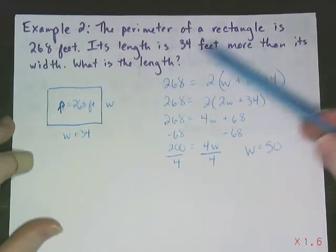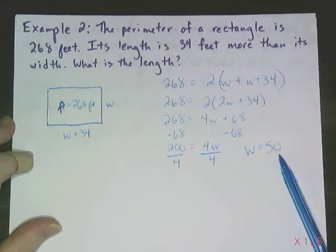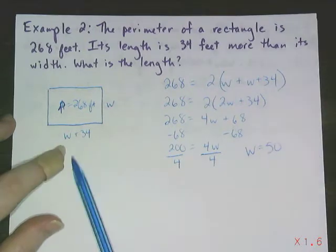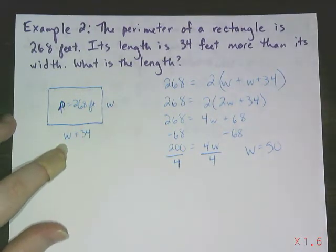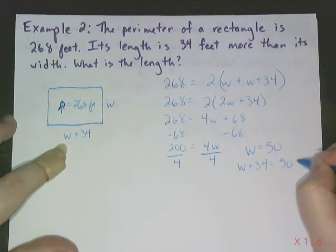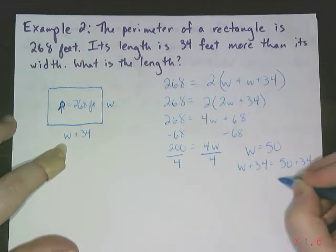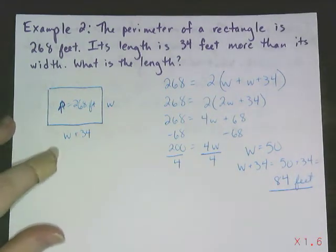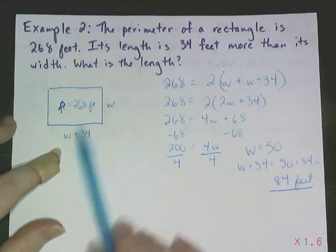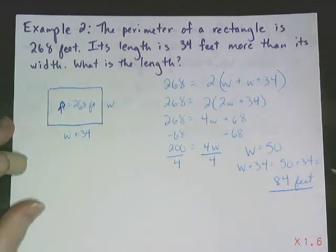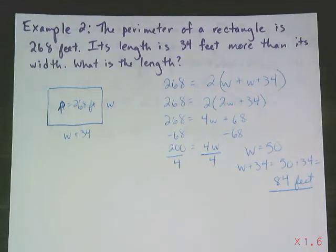I check my answer. Wait a minute. W is equal to 50. That's the width. I want to know the length. I'm going to have to go back and do a little bit more work. I want to know how long this side is. So W plus 34 is the same as 50 plus 34, which is 84. And I include my units of feet. And we can check that. 50 plus 84 plus 50 plus 84. Do your math. Yes, that adds up to 268. The alternative is that I could have set this problem up better from the beginning.